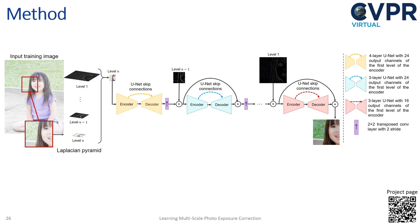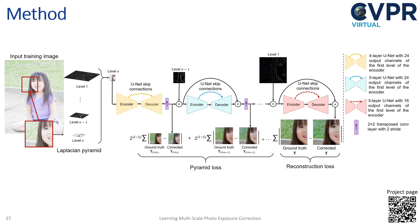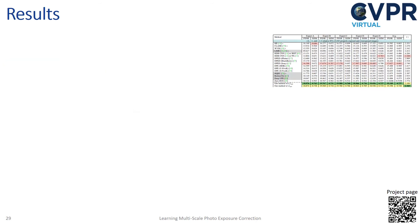The goal of each subnetwork is to predict the correction to the input Laplacian values at each level. The details of each subnetwork are shown here. This multi-scale approach allows us to enforce loss functions at each pyramid level as well as on the final reconstructed result. To further increase the perceptual quality of the result, we add an adversarial loss term. See our paper for more details on how we structure our adversarial loss.